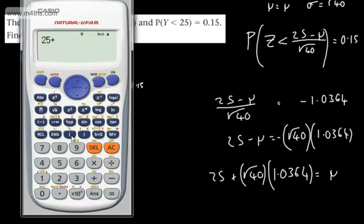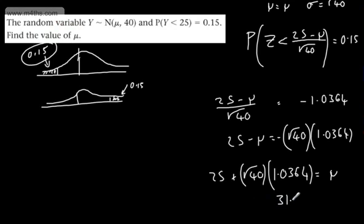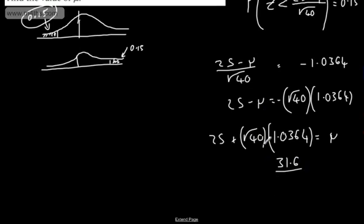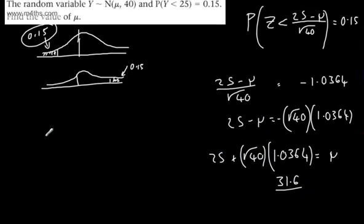So we've got 25 plus now root 40. So let's do that, root 40. And we're going to now multiply this by 1.0364. And that will give us the value. So what do we end up with now? 31.55 and so on. So I'm going to say to three significant figures, this is going to be 31.6. And again, I'll be inclined to just put my calculator answer on and then just round to three significant figures.